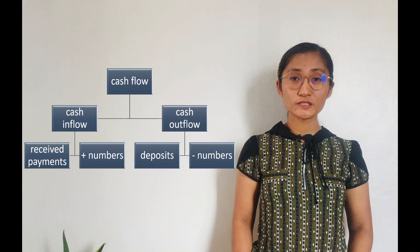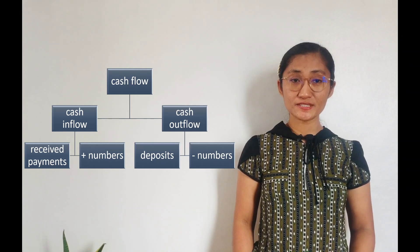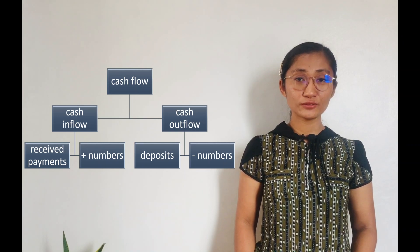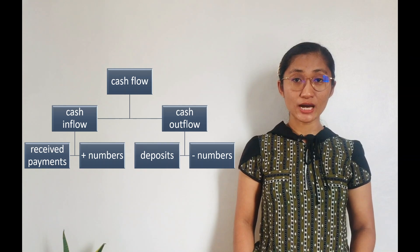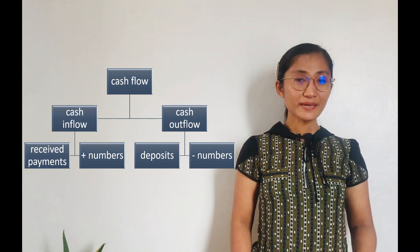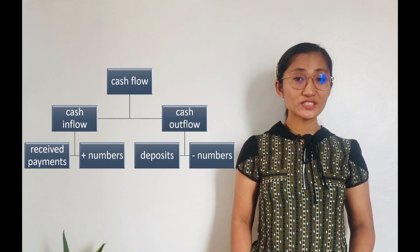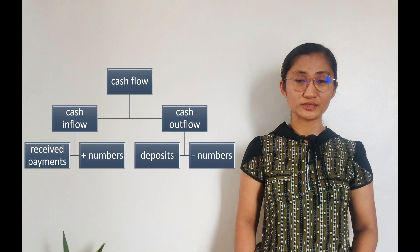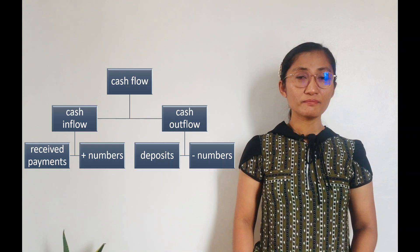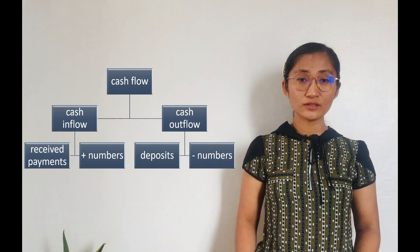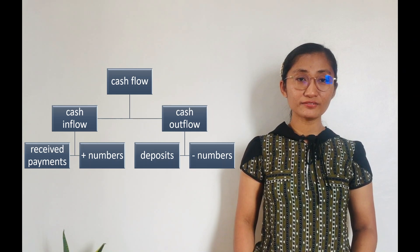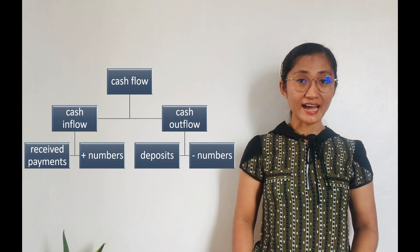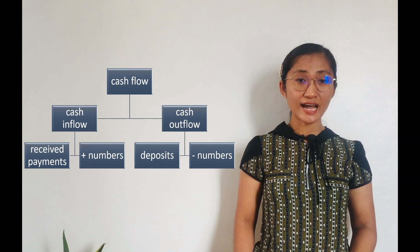Cash flow refers to payments received or deposits made. It can either be cash inflows or cash outflows. Payments received, signified by positive numbers, are called cash inflows. Meanwhile, deposits made, denoted by negative numbers, are termed as cash outflows.